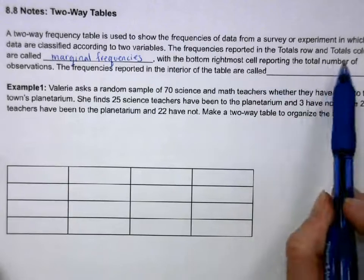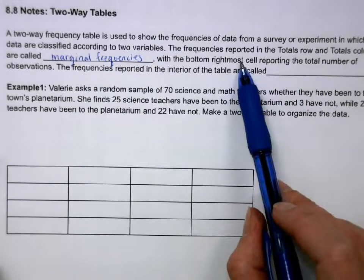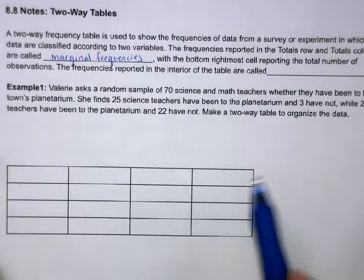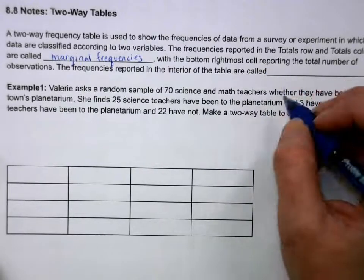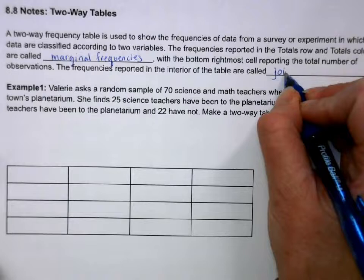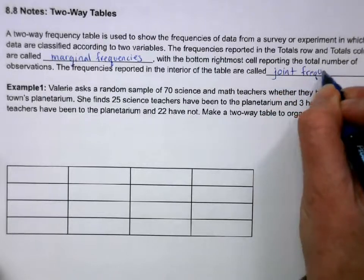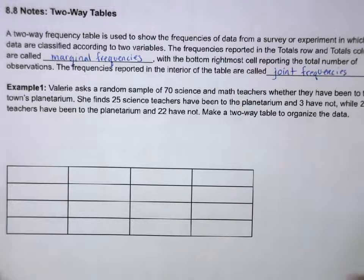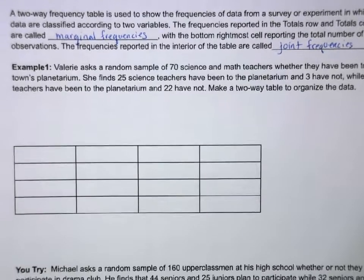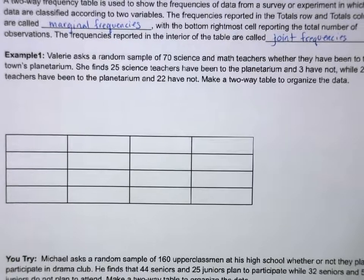The bottom right cell reports the total number overall. The frequencies within the interior of the chart are called joint frequencies. These are not hugely important terms, but good to know.